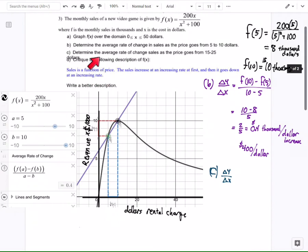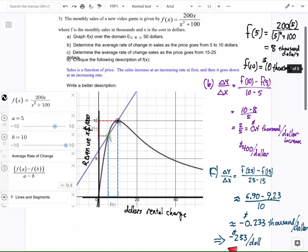Part C asked for the average rate of change from 15 to 25 dollars. I do the same thing. I end up with a negative rate, which means we're losing money, and that means we're losing about 233 dollars for every one dollar increase over that ten dollar interval.